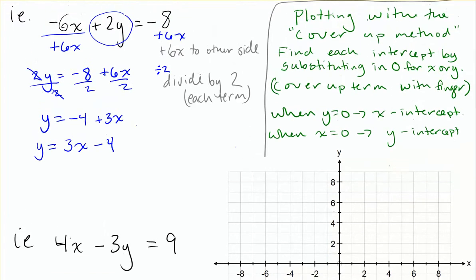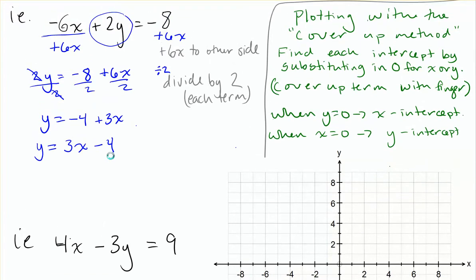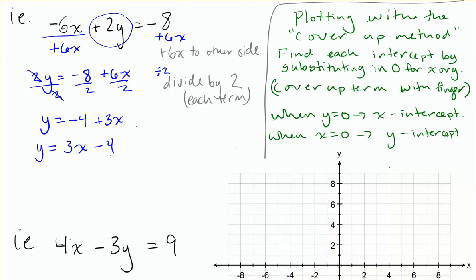So another trick for us for plotting these is that we can do what we call the cover-up method. So with the cover-up method, what we do is we rely on the fact that we can find the intercept for x and y axes if we substitute in a 0 for an x or a y. So what we can do is, in a sense, cover up a term with one finger. And when we use y is equal to 0, it will get us the x-intercept.